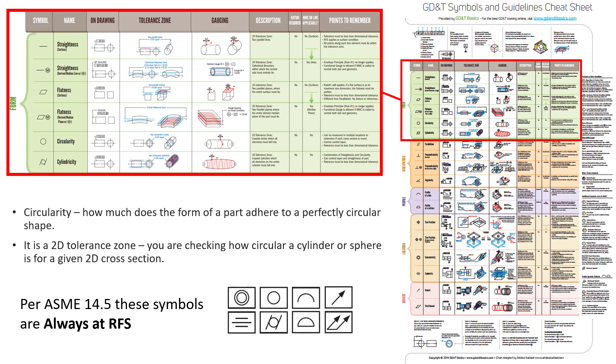All of these symbols down here are at RFS. And just to point that out, that's why flatness and straightness are back on there twice, because when applied to a feature of size, those can have the MMC modifier. So for circularity, it's a 2D tolerance zone. So when you're in the fundamentals course, cylindricity is three dimensional.